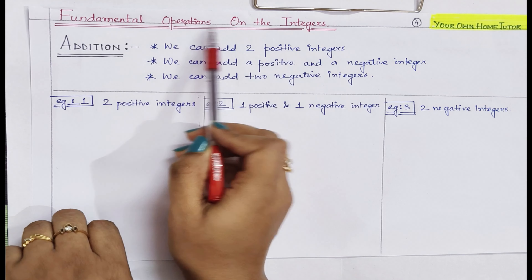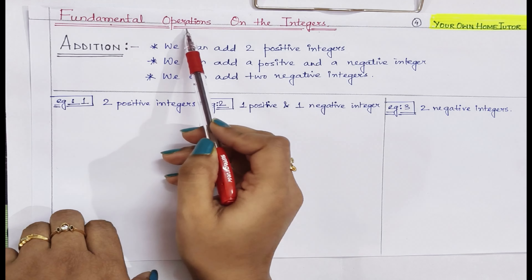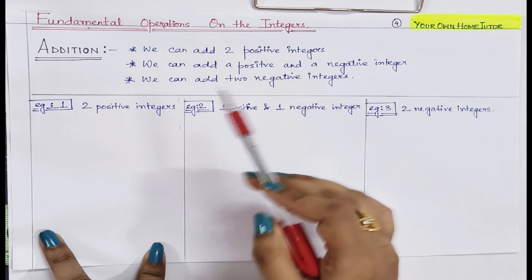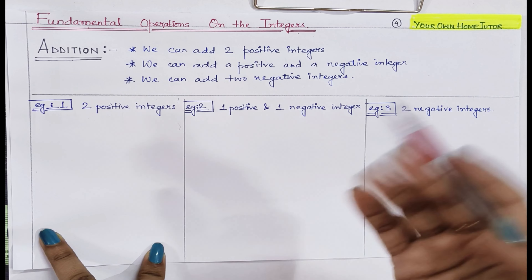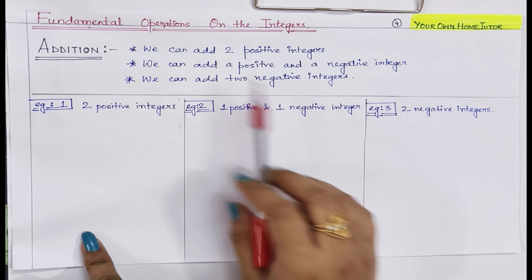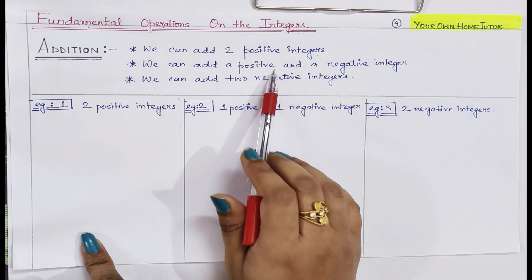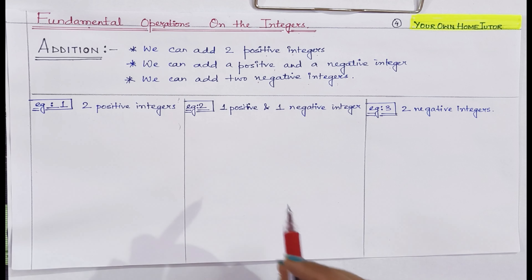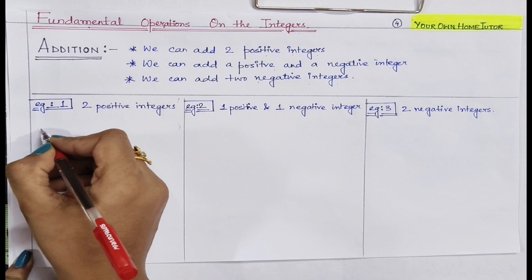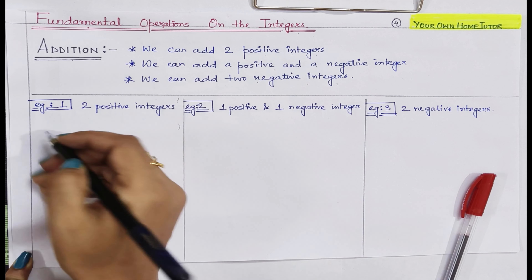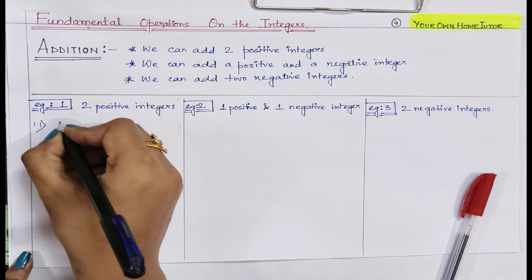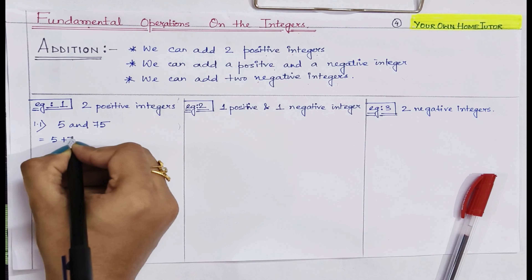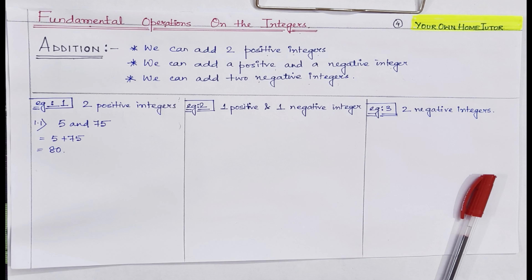Now let us see fundamental operations on integers. Under fundamental operations, we will cover addition and subtraction in this lecture. For addition, we can add two positive integers, a positive and a negative integer, or two negative integers. For two positive integers — let's take 5 and 75 — we simply add them and get 80.